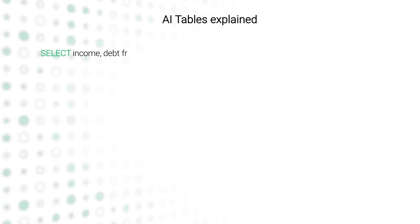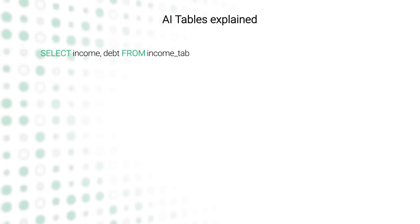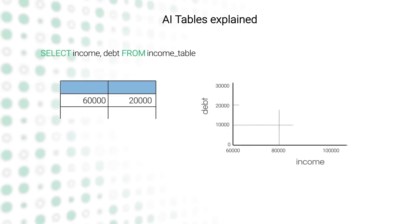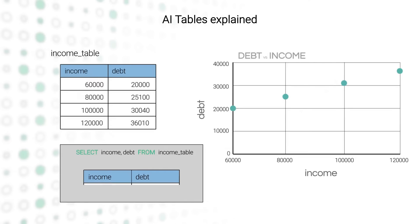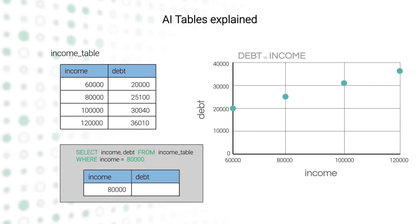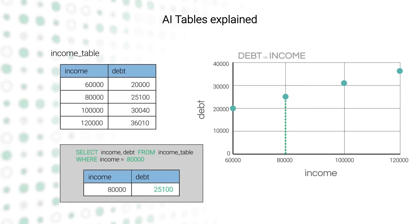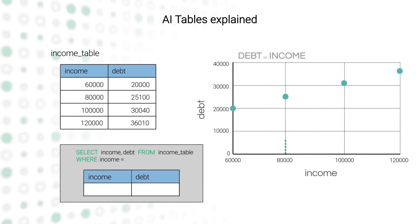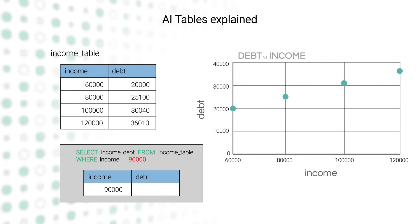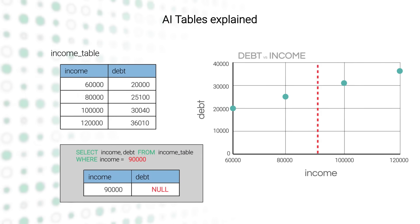Take a very simple table with debt and income. If you query this table for someone with an income of $80,000, it will return a debt level of $25,100. But what if you queried an income level that wasn't present on the table, like $90,000? You receive no answer.